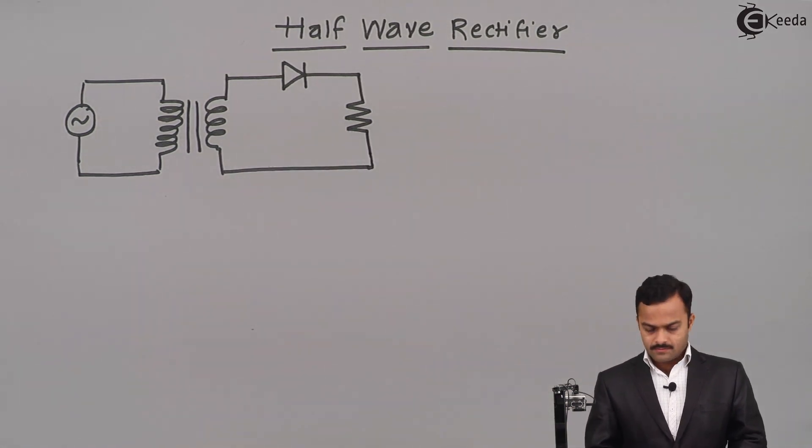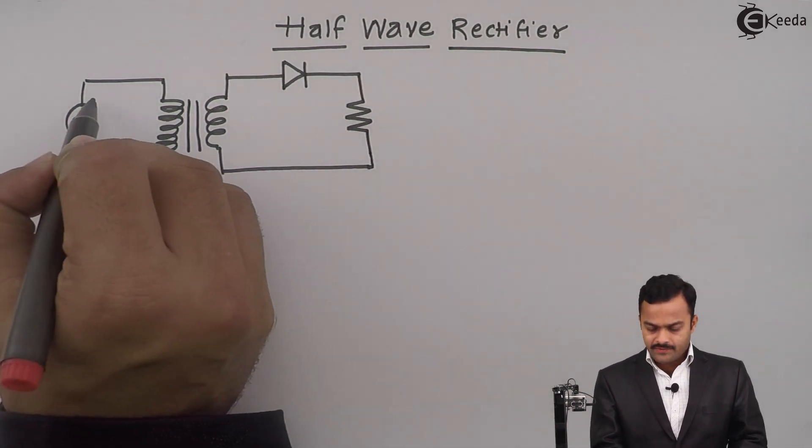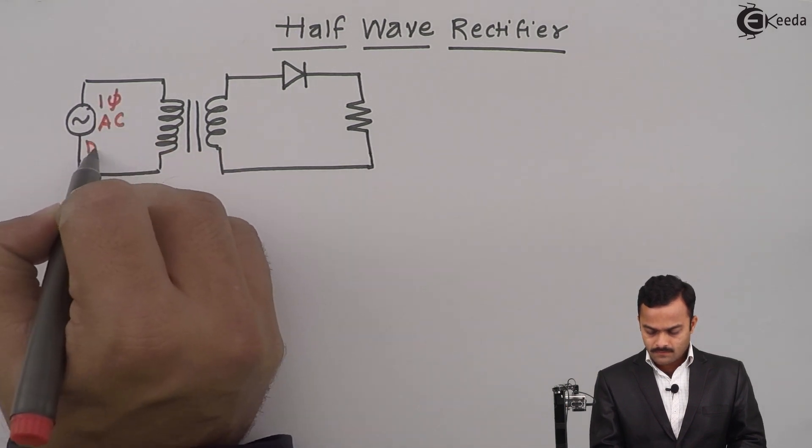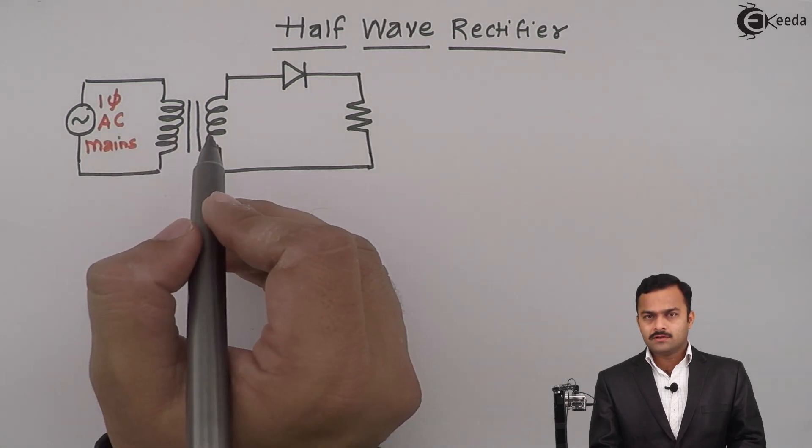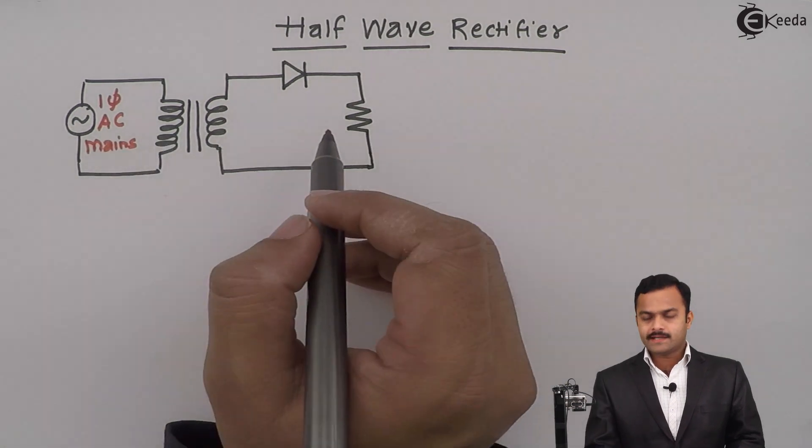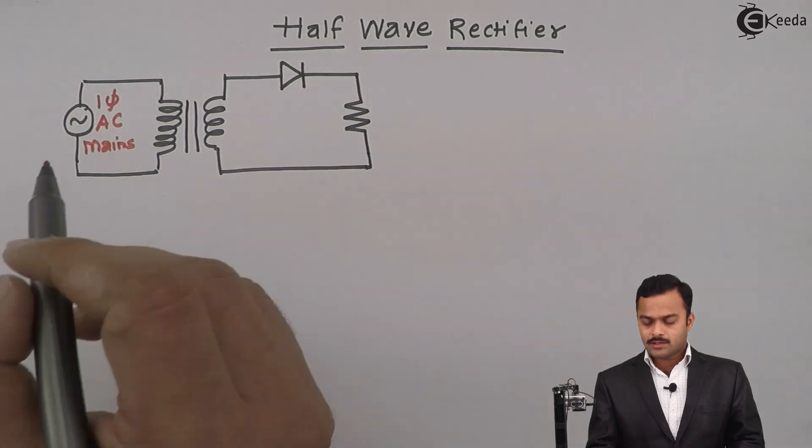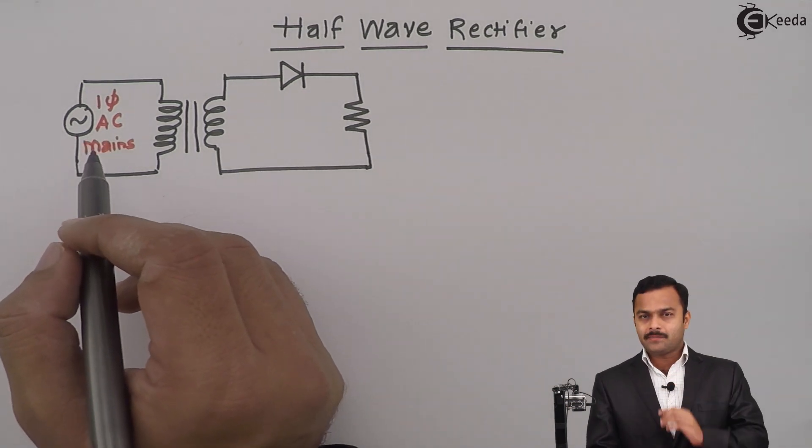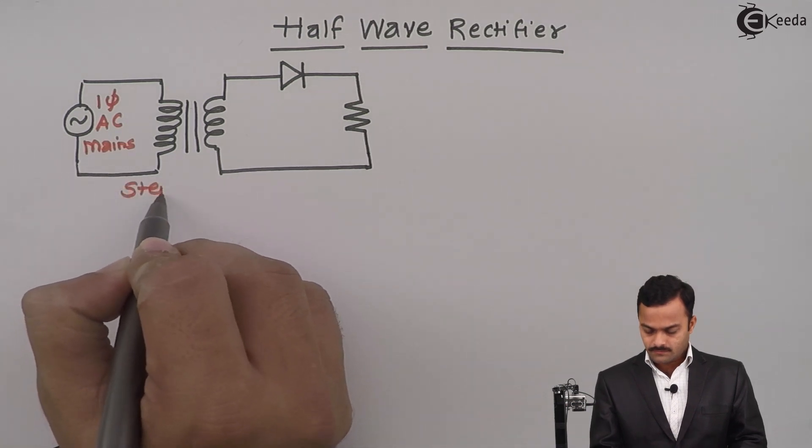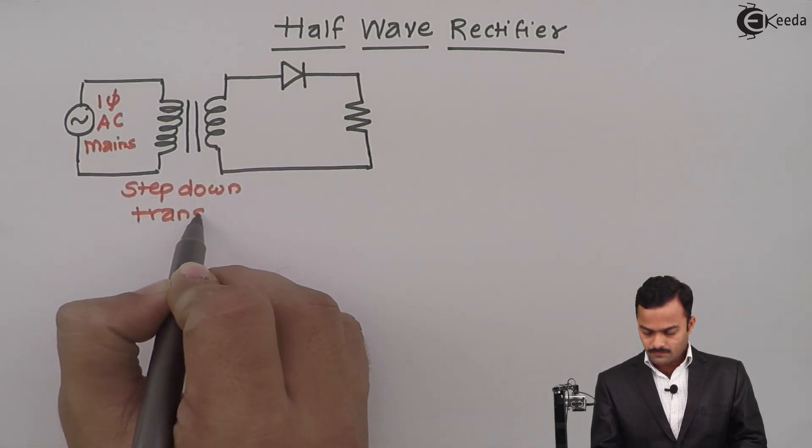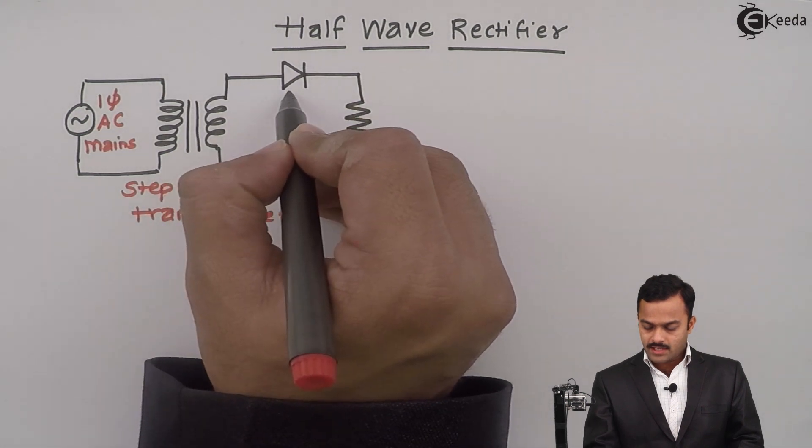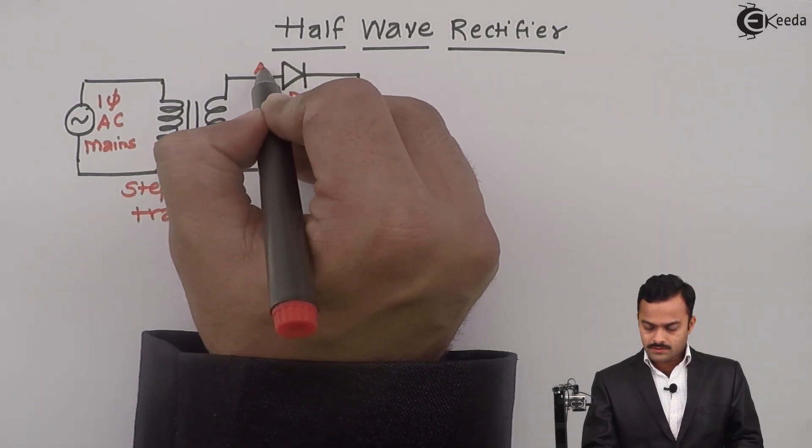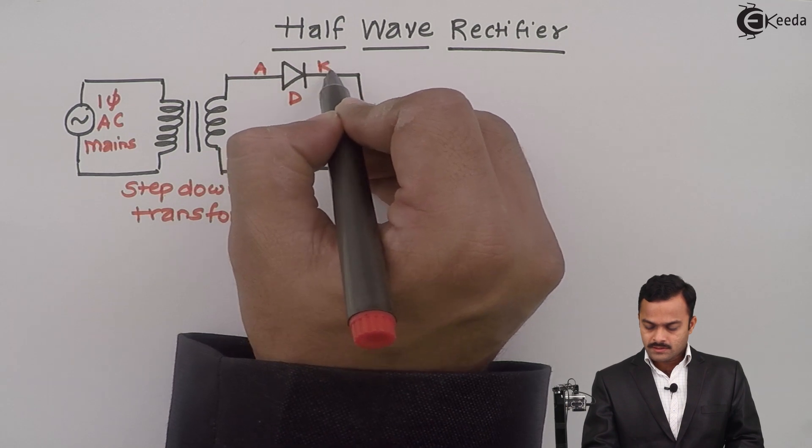In the circuit diagram, I am having the single phase AC mains connected to this transformer, which is a step down transformer because the DC voltage required is very less compared to AC mains voltage, so we need to step it down. Then this step down AC voltage is given to this diode, with this as anode and this as cathode.